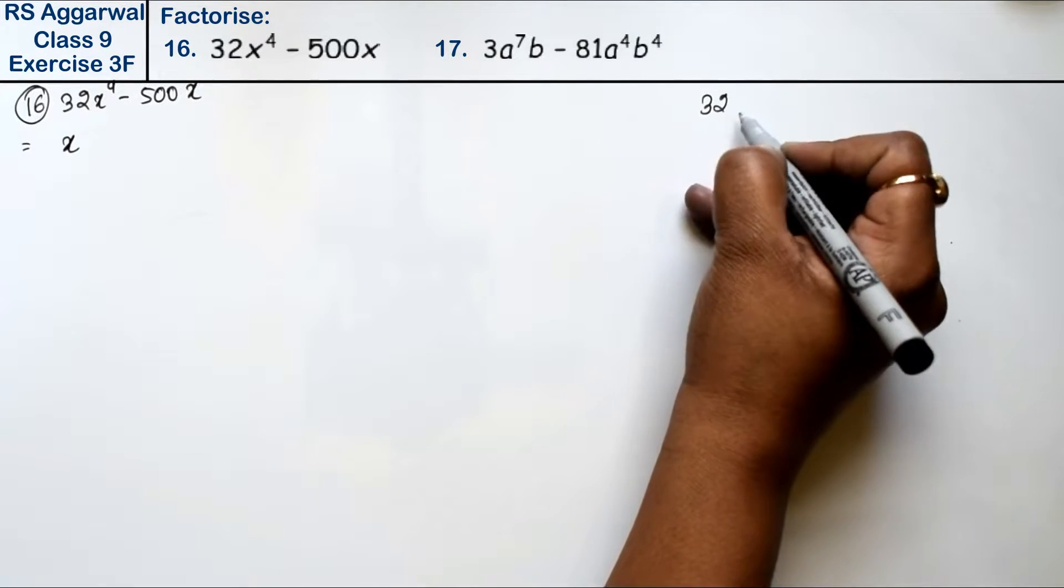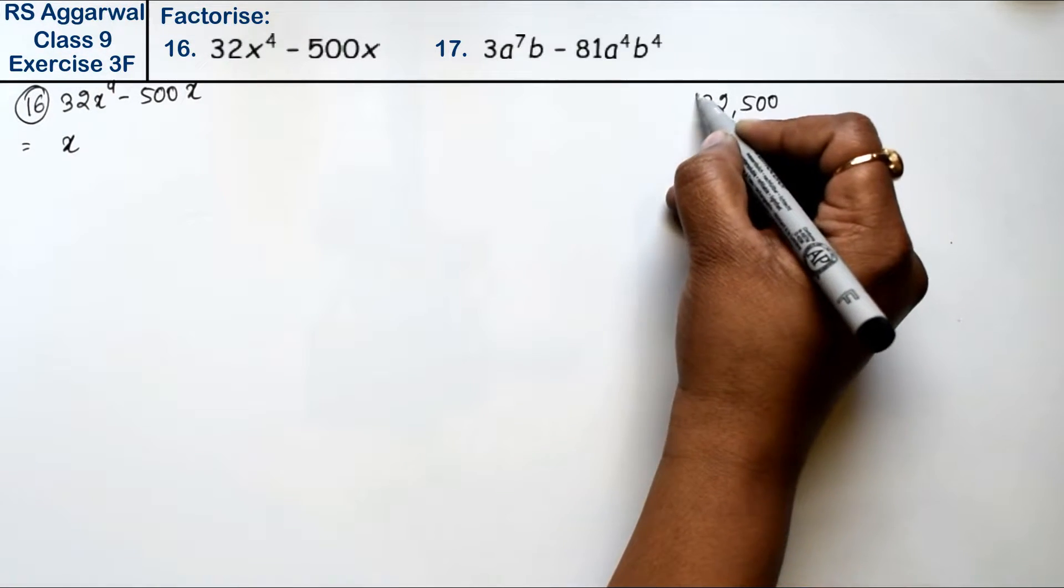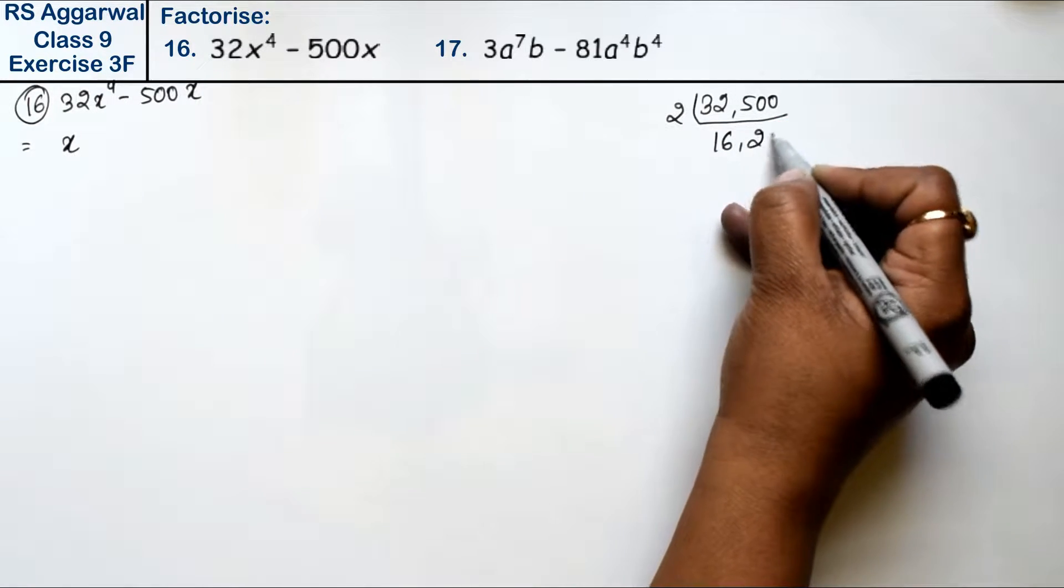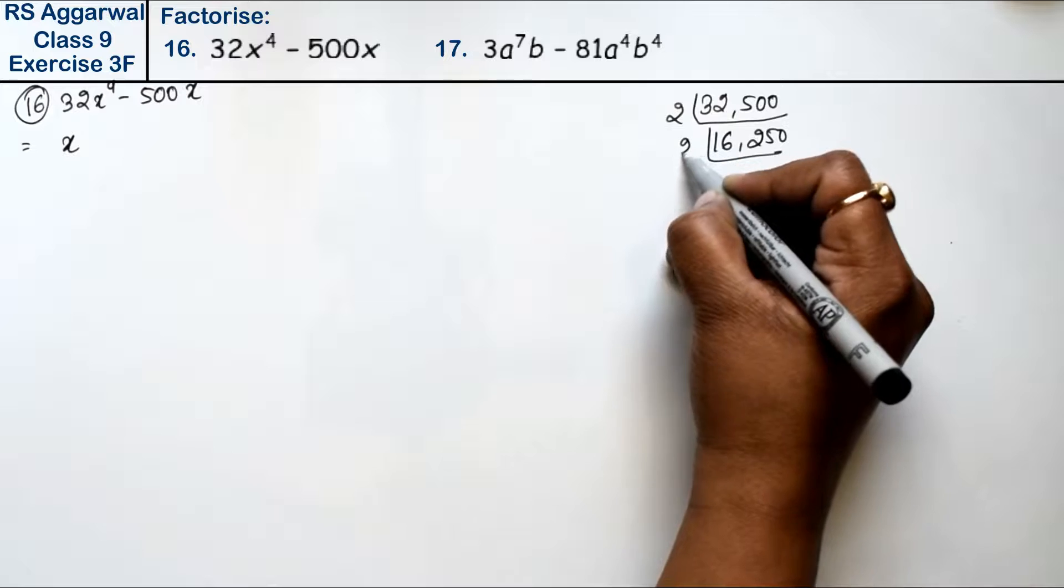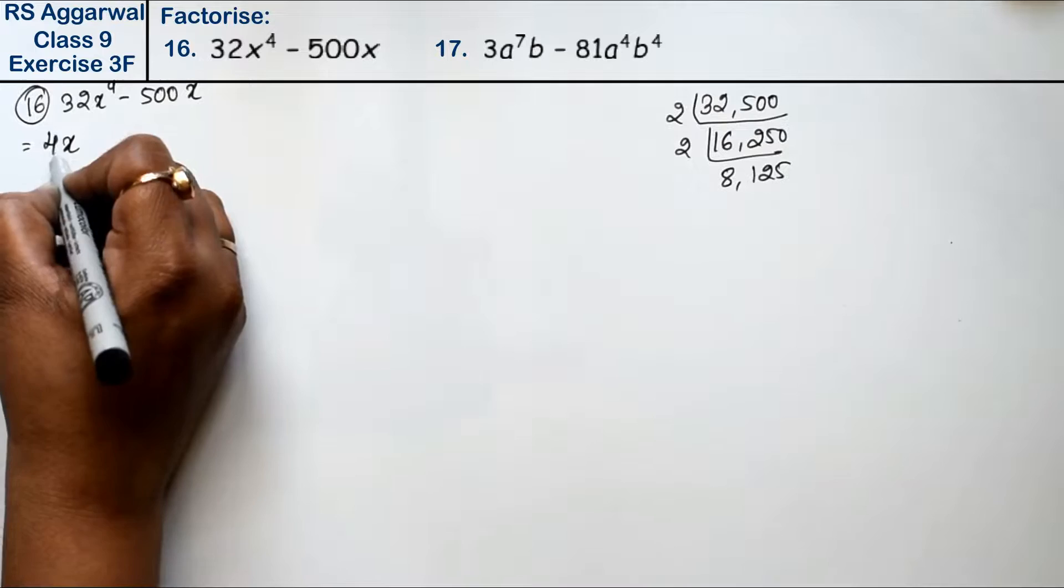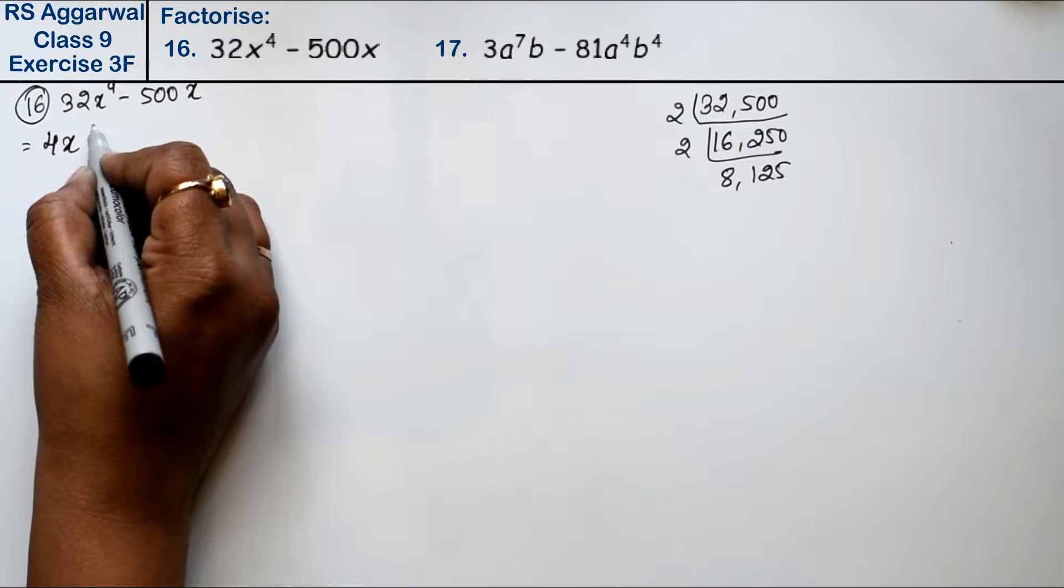Between 32 and 500, dividing by 2 gives 16 and 250. Again dividing by 2 gives 8 and 125. So 4 is common. What remains inside?